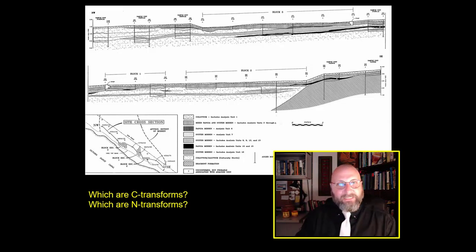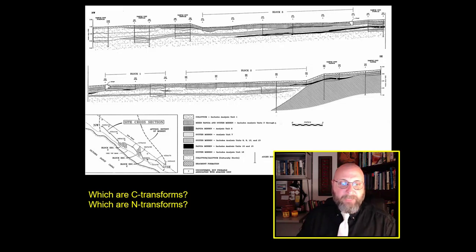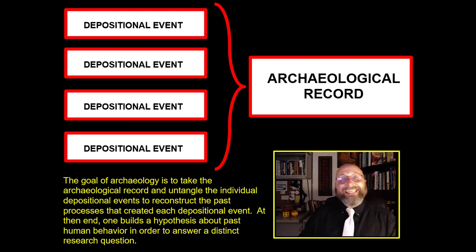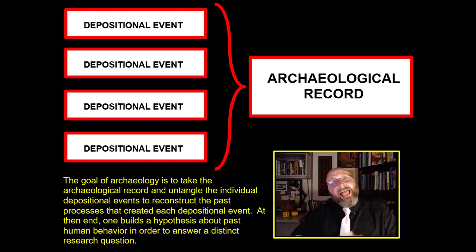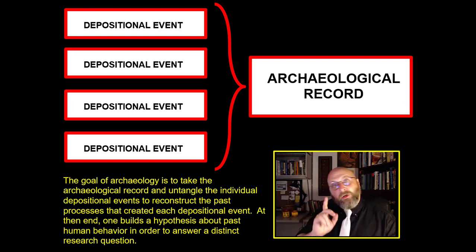The thickness of the middens probably doesn't reflect how long they stayed — with one cut through the sand, we're probably clipping the edges or the center of camps, so it may reflect spatial orientation rather than duration. At any rate, these are all differences in C-transforms and N-transforms as both humans and nature alter the archaeological record. The goal of archaeology is to take the archaeological record and untangle all of these different depositional events in an attempt to reconstruct the past, building a hypothesis about past human behavior and seeing if the record upholds, falsifies, or modifies that hypothesis.